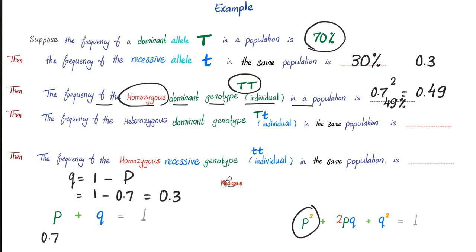Next, what's the frequency of the heterozygous dominant genotype in the same population? What are they asking about now? 2pq. All right. 2 times p times q. What is the p? Well, I know that p is 0.7. And what's the q? I know it's 0.3. And this will give you what? 0.42, which is 42%. Awesome.